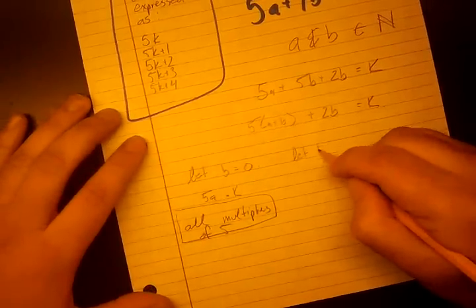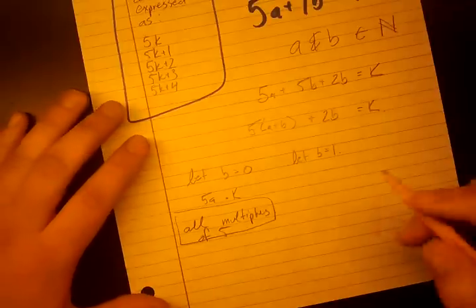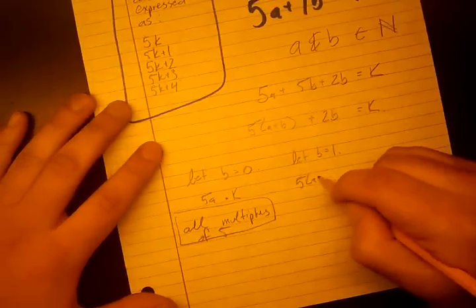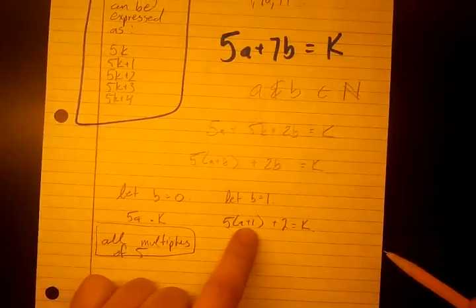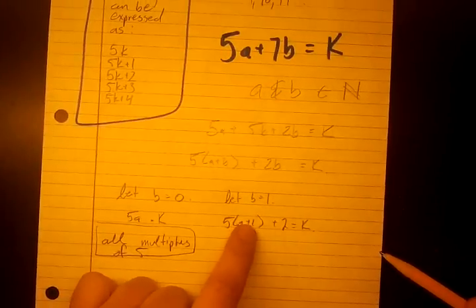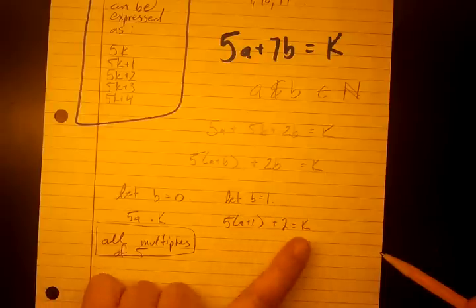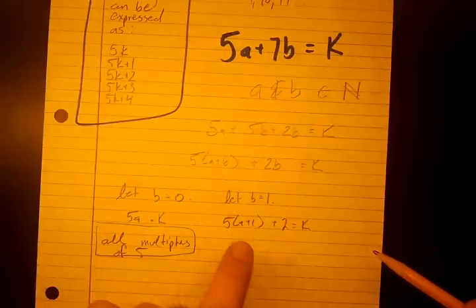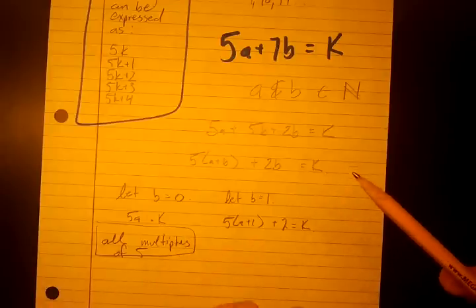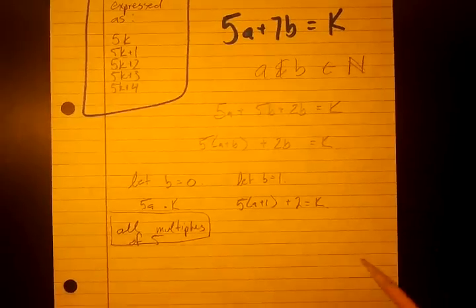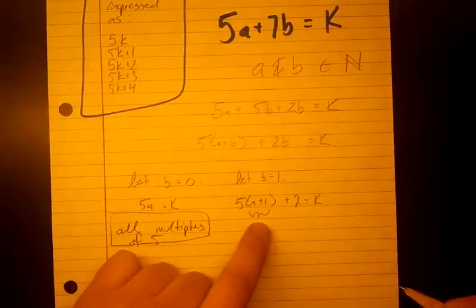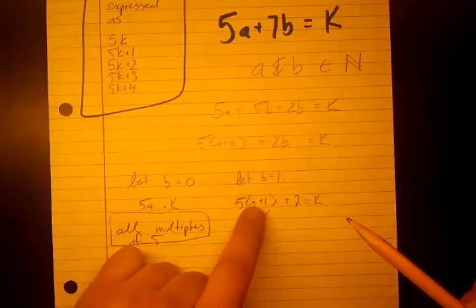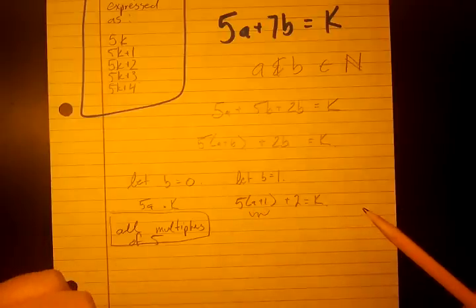Now let's say, let B = 1. What does this equation become? 5 times (A+1) + 2 = K. So now first thing to note is that no matter what the coefficient of 5 is, since A is a natural number, A+1 is a natural number. Which means that this whole thing right here, 5(A+1) + 2, is going to be some multiple of 5 plus 2, no matter what. So what values can A+1 take? Well, A+1 can take, we have to see what values A can take. So A can take 0, 1, 2, 3, 4.